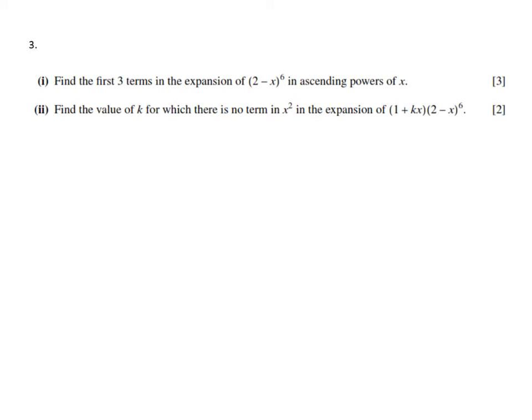Part (ii) says: find the value of k for which there is no term in x² in the expansion of the given expression. Let's start with part (i) in ascending powers of x, so x to the power 0, to the power 1, to the power 2, increasing powers of x.